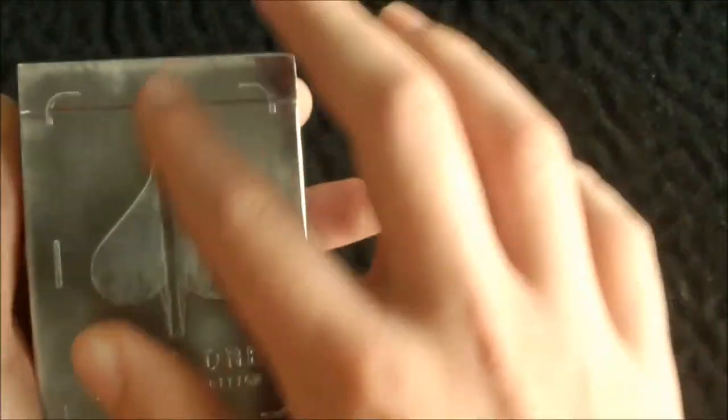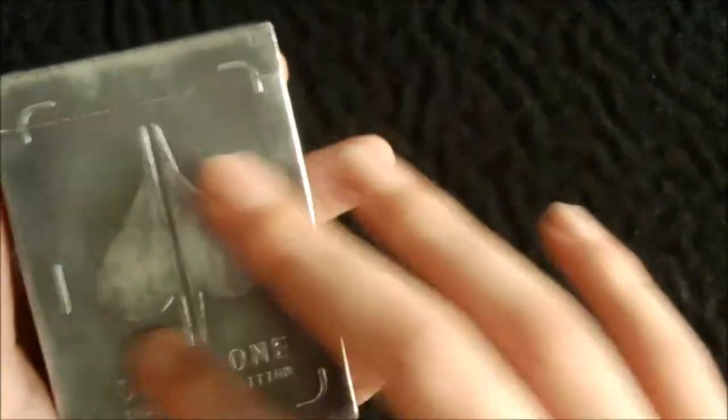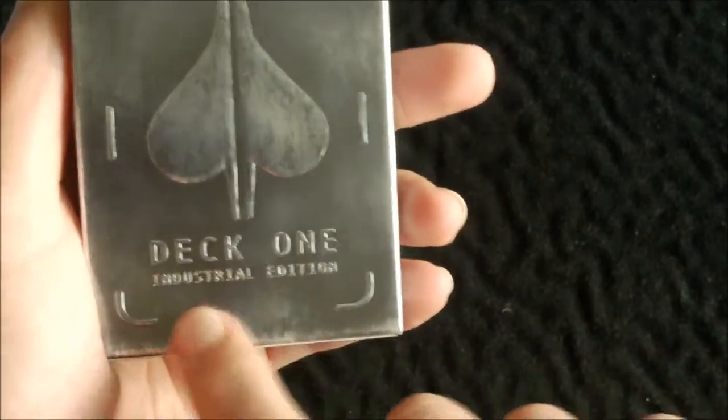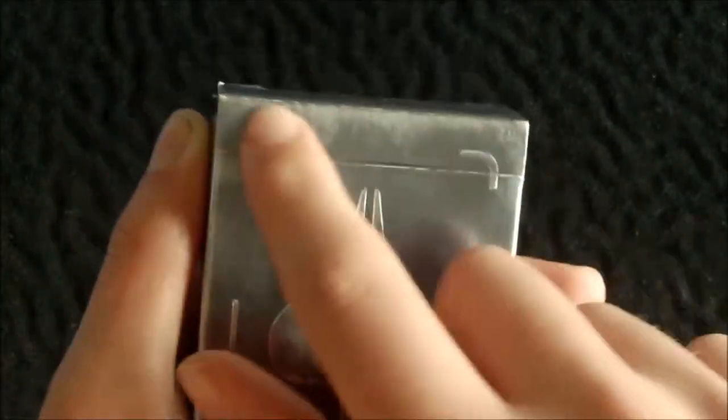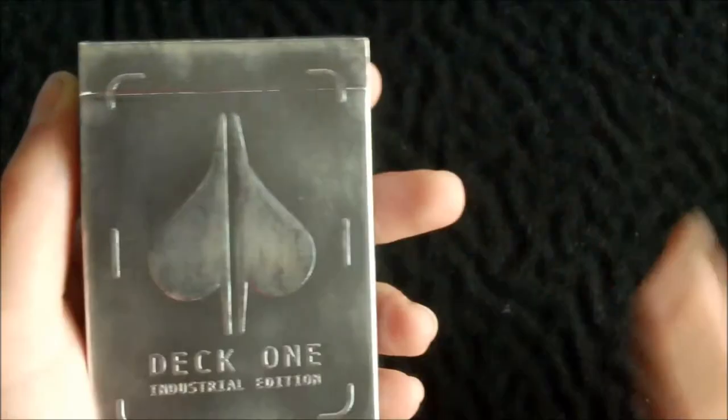So let's actually get into it. On the front of the box you can see that it has this simplified spade pip here, kind of two halves basically. Below that it has Deck One Industrial Edition, and then along the outside you have this nice bracket type border thing.